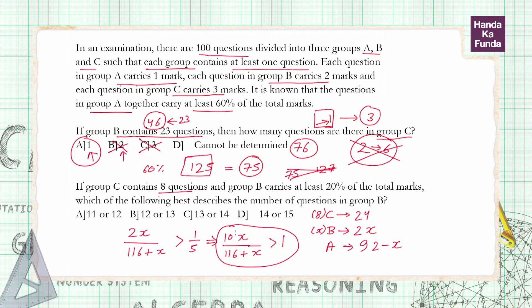Now if I put x as 11, I get 110 by 116 plus something, so 11 cannot be the answer, which rules out option A. 12 will mean 120 by 128, which is again not possible, so 12 is also ruled out. 120 by 128 is less than 1, so 12 is also ruled out. Then if I put x as 13, I get 130 by 129, that is possible, so 13 is a possible value.